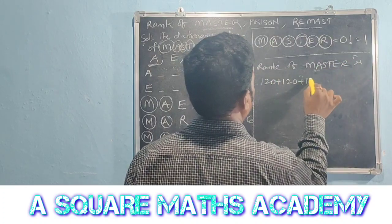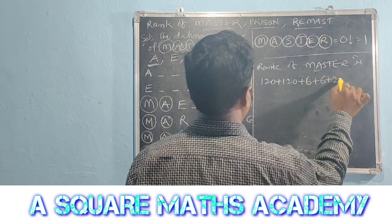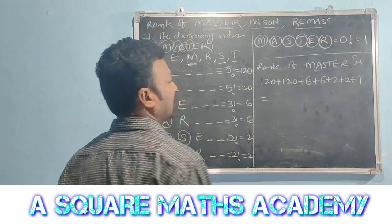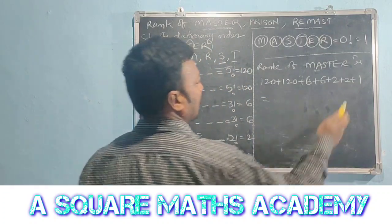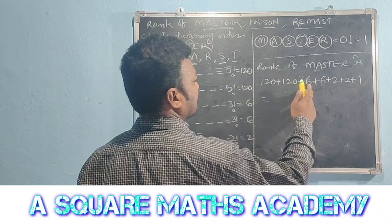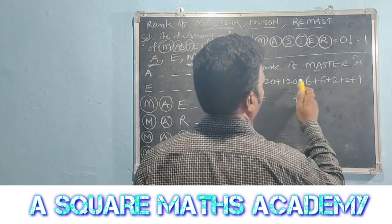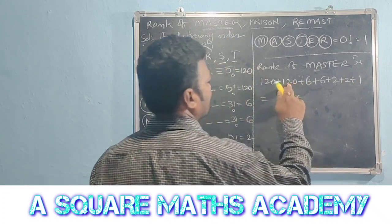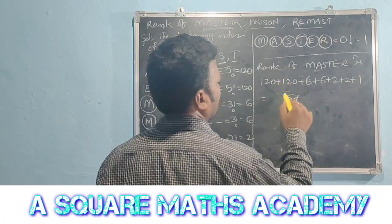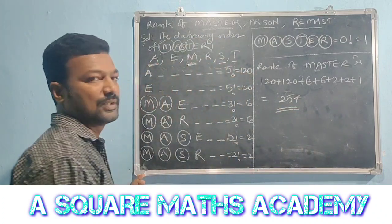So the total is: 120 plus 120 plus 6 plus 6 plus 2 plus 2 plus 1. That is 120 plus 120 equals 240, plus 11 plus 6 equals 17, plus 3 plus 2 equals 5. So 257 is the rank of the word MASTER.